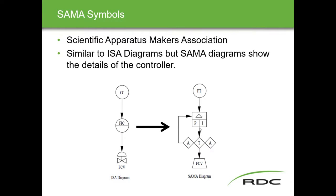Think about what's inside a controller — set point, feedback, auto-manual, controller output, comparing set point to process variable. SAMA diagrams represent each of those functions as separate blocks. One block represents proportional, another represents integral, the delta symbol indicates a difference — comparing the PV measurement to the set point — and there's an auto transfer switch. Ultimately a signal is sent out to the control valve.